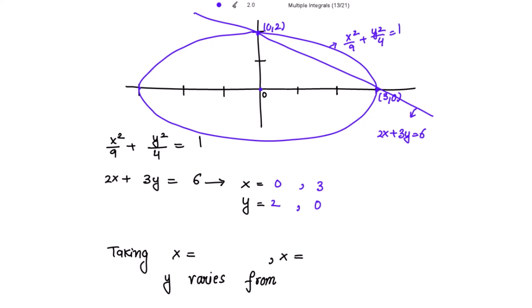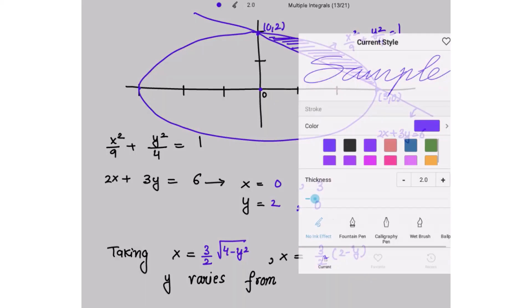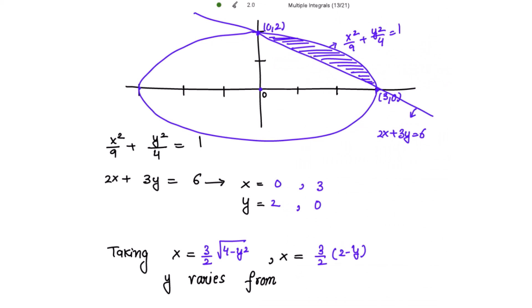We have to find the smaller area bounded by the ellipse and the straight line. The smaller area is the region between them. Taking x from the equation of the ellipse gives x = (3/2)√(4 − y²), and from the line gives x = (3/2)(2 − y). Because the values of x are in terms of y, the strip will be parallel to the x-axis — a horizontal strip.